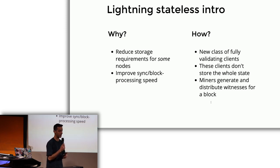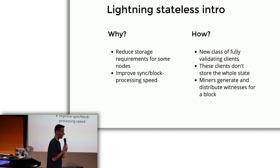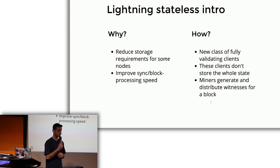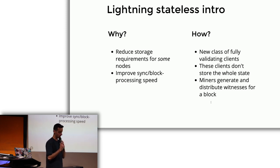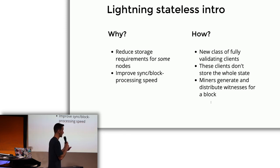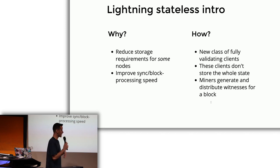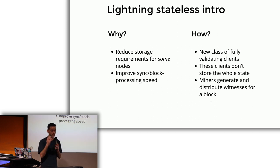Stateless clients only store parts of the state that they care about. They depend on miners who, in addition to producing a block and propagating it to the network, would also produce what we call block witnesses — Merkle proofs. Miners say: here's a block, this is all the parts of the state that this list of transactions needs, and these are all the Merkle proofs that prove their validity. They include these witnesses in the block so that stateless clients, when they receive the block and the witness, can verify those parts of the state and run the transactions against them.